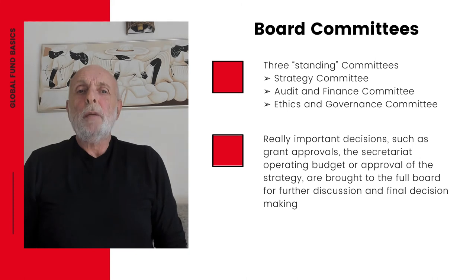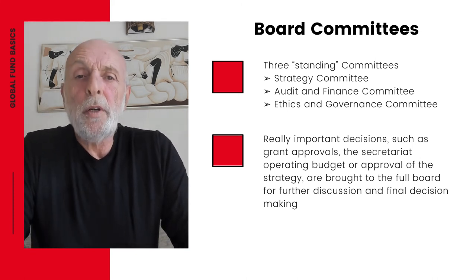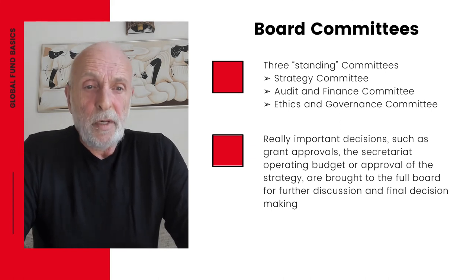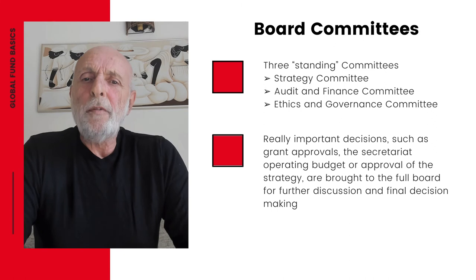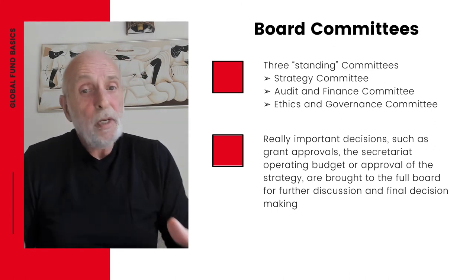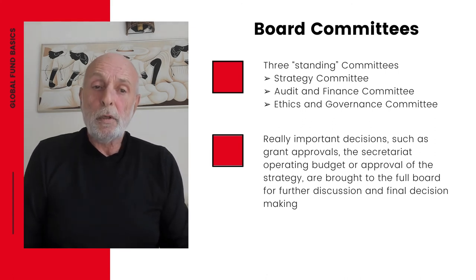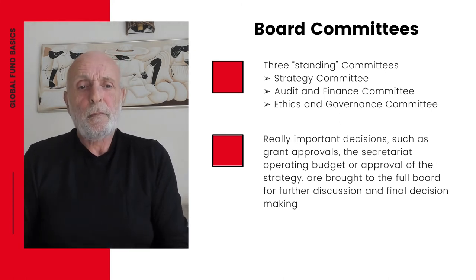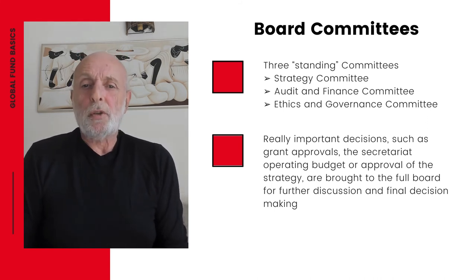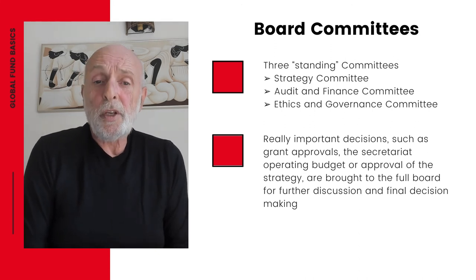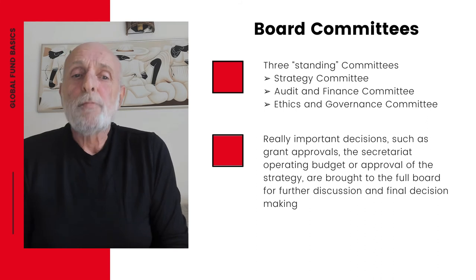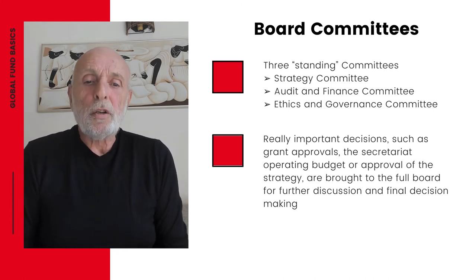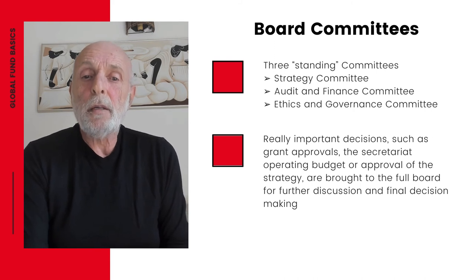Moving on to the board committees, there are three standing or permanent committees: the Strategy Committee, the Audit and Finance Committee, and the Ethics and Governance Committee. The standing committees enable the Global Fund Board to do its work — each committee has delegated authority from the Board to make decisions and perform advisory and oversight functions in their specific areas. Really important decisions such as grant approvals, the Secretariat operating budget, or approval of the strategy are brought to the full Board for further discussion and final decision making. The coordination of the work of the Board and the committees is managed by the coordinating group.